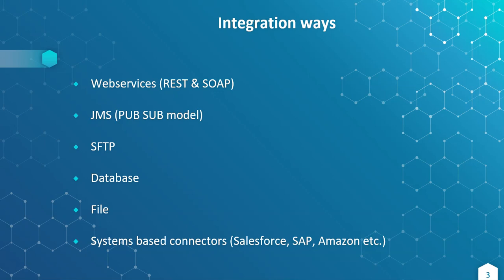With system-based connectors, there is no need to write a lot of logic to connect to other systems and get the data. For example, Salesforce, SAP, Amazon, etc. We have these connectors in Mule ESB to interact with Salesforce, SAP, Amazon, and other systems — to send the data and to get the data. Among these, the most efficient way — used 90% of the time — is web services, then JMS, then system-based connectors. Of course, databases we use in each individual system to persist the data.